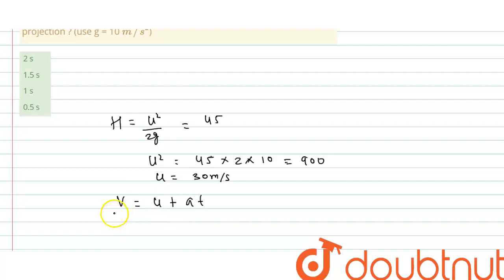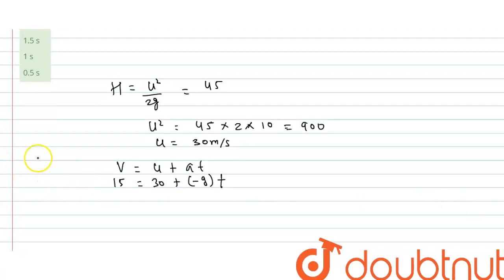V is final velocity, final velocity is 15 meter per second, half of initial velocity. Initial velocity is 30 meter per second. And acceleration due to gravity is minus g, negative sign, because this acceleration is in downward direction. Gravitational force is in downward direction, and particle moving in upward direction. So here, 15 minus 30, minus 15 is equals to minus 10 into t. So t is equals to 1.5 second.